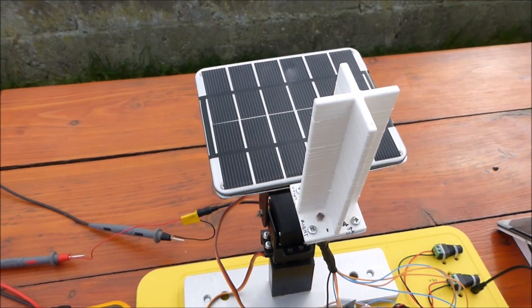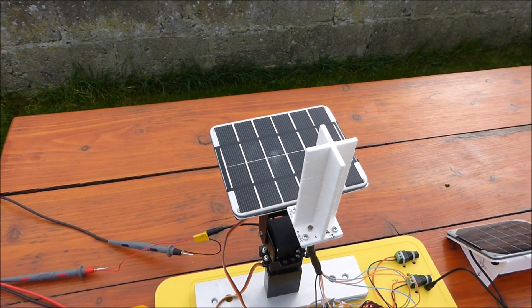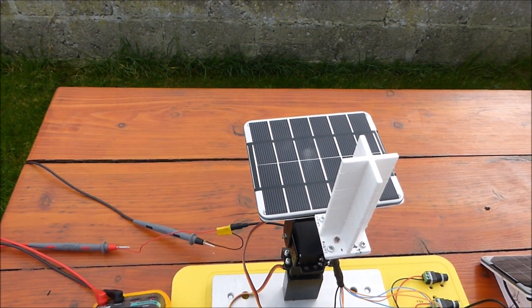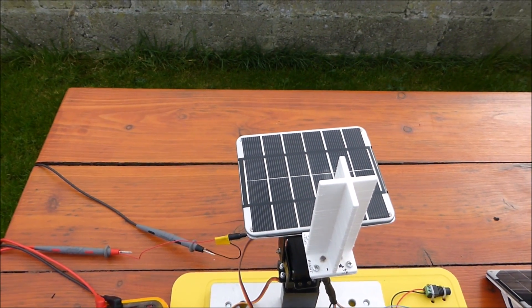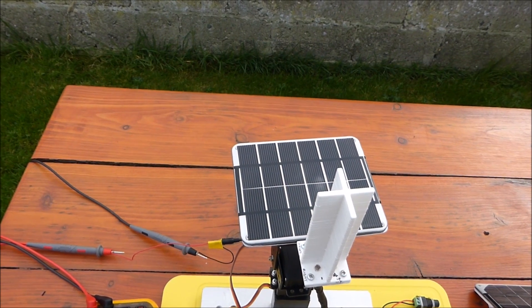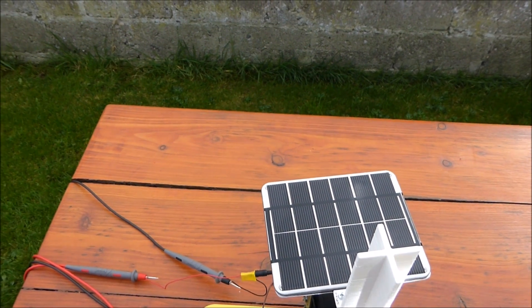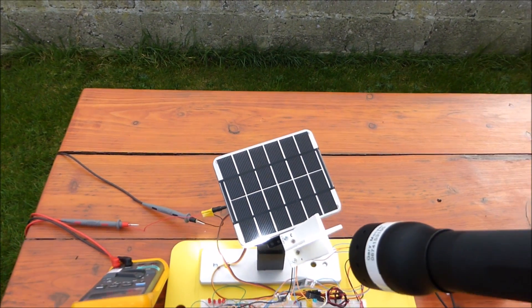If we now look to see what the dual-axis solar tracker is doing, you can see that it's hunting, finding the brightest part of the sky, looking for the area of the most bright insolation. What we'll do is we can artificially see how this will change by using a torch.